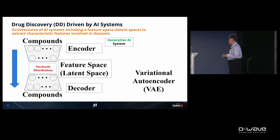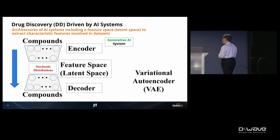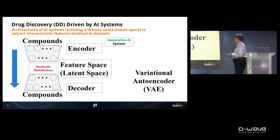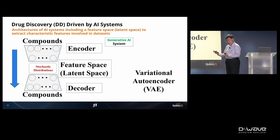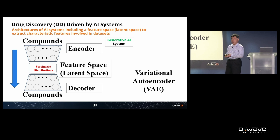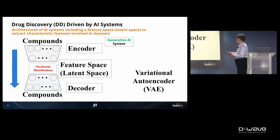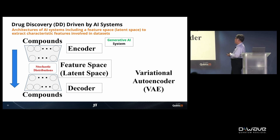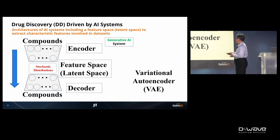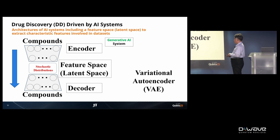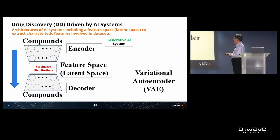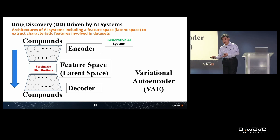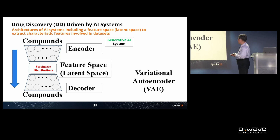I think you may find this strange. The important part is the central portion — the feature space or latent space — where we extract characteristic features from the input dataset. In this feature space, stochastic distributions are embedded. In the generation phase, we can generate new data by sampling from these stochastic distributions, like rolling dice.